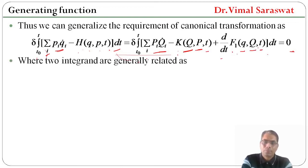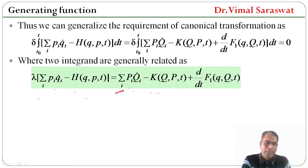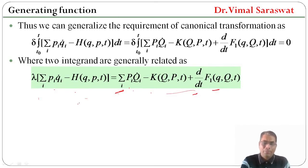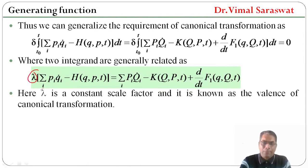The two integrands are generally related as: lambda times sigma_i (p_i q_i_dot minus H) equals sigma_i (P_i Q_i_dot minus K) plus d/dt of F1. Here lambda is a constant scale factor, and it is known as the valence of the canonical transformation.